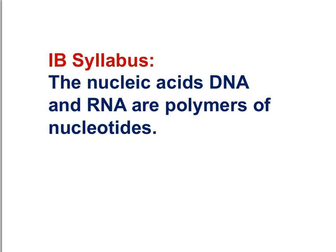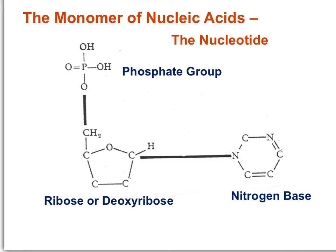The first IB syllabus statement to kick off this movie is that nucleic acids DNA and RNA are polymers of nucleotides. So let's take a look at nucleotides. The monomer of nucleic acids is a nucleotide, which you can see in this diagram.